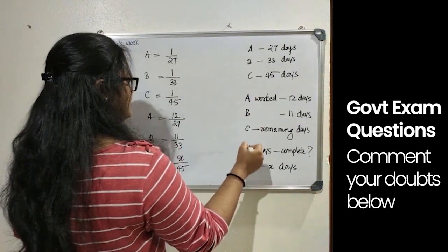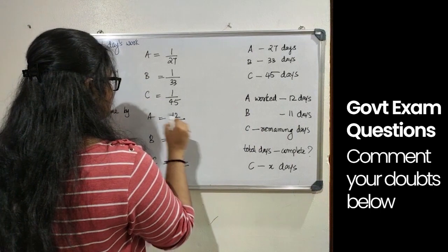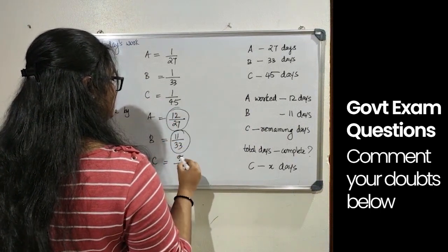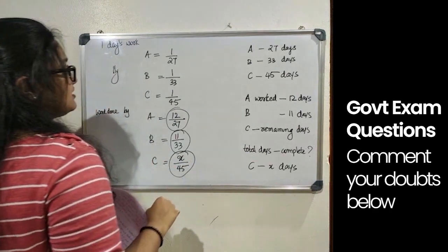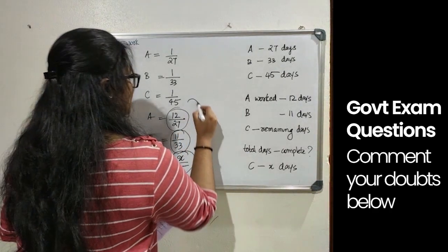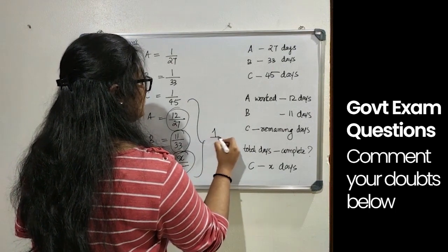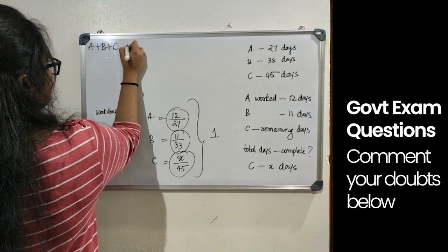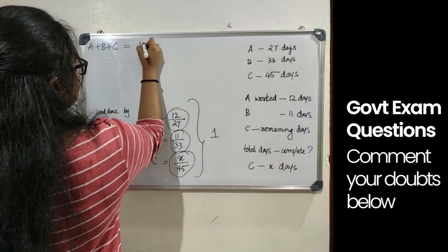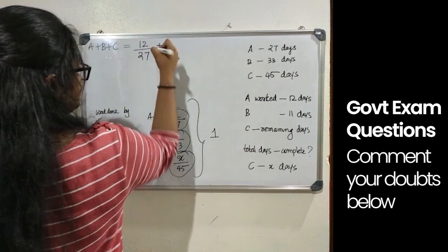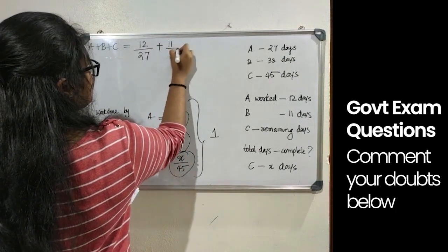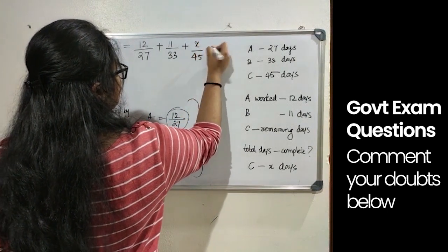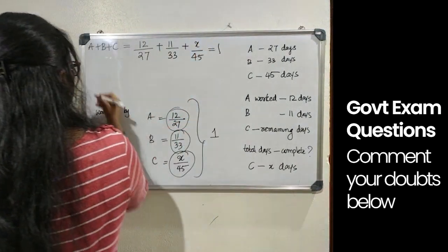We know that A, B and C together completed the work. So the part of work done by A is 12 by 27, B is 11 by 33 and C is X by 45. Summing up all this, we get the value 1.